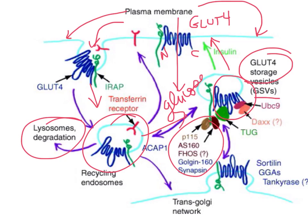All of this transport is regulated by rabs and snares. Rab regulates the transport; snares do the fusion. For those thinking about it, you might ask: what's the coat? It's not at all clear what the coat is, if there is one. Remember, coats are required for vesicle budding and for the concentration of cargo. In this case, the cargo is already concentrated, waiting in a GLUT4 storage vesicle for insulin signaling to get the receptor back to the plasma membrane.